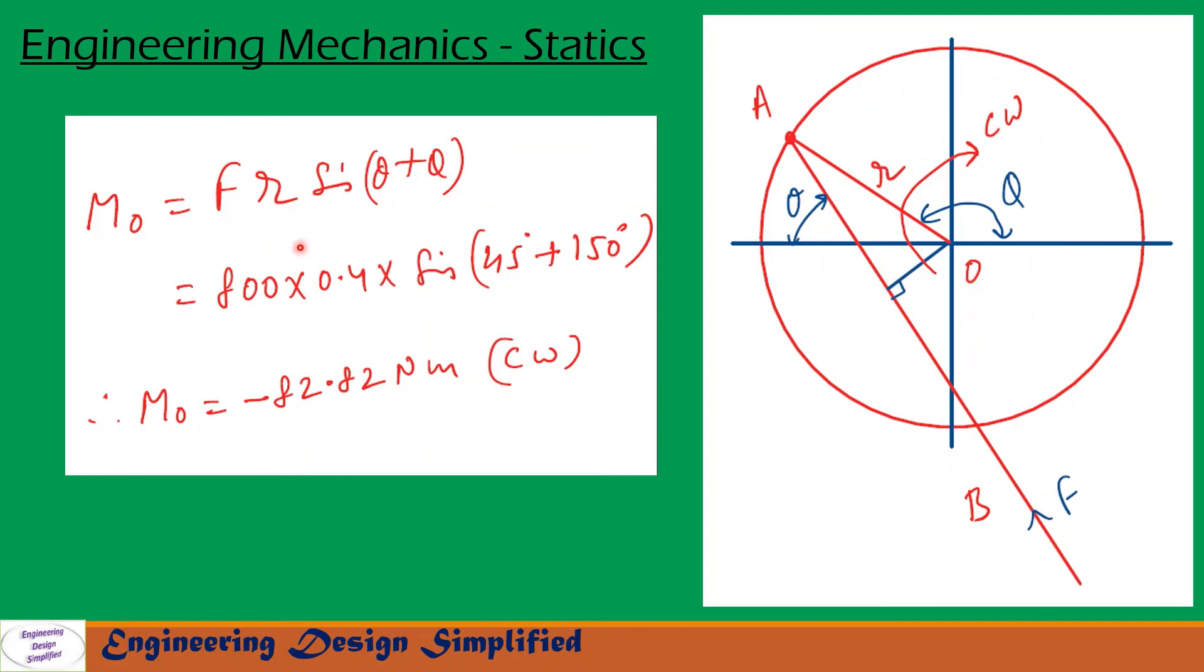Now let us substitute the values: F = 800, r = 0.4, theta = 45°, and phi = 150°. After simplification, we get Mo (the moment due to this force F about point O) equal to -82.82 N·m. The minus sign signifies that the moment due to F about O will be in the clockwise direction.